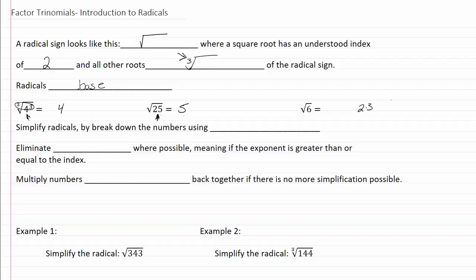So one of the ways that we can simplify radicals is by breaking down the numbers using prime factorization. We want to eliminate or simplify radicals where possible, meaning that if the exponent is greater than or equal to the index we can simplify it. Then we multiply the numbers inside the radical back together if there's no more simplification possible.